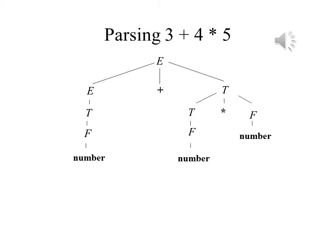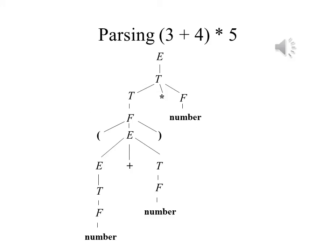Here we see the parse tree as we derive it for 3 plus 4 times 5. On the left, our sub-expression has only one term, and the term on the right has two factors. It lets us see quite plainly that we are multiplying 4 times 5 before doing the addition. Here we see an expression that is a little different: we do the addition first and then the multiplication. We only have one term in the expression, even though one of its factors is an expression inside parentheses. We can parse that expression as part of the larger expression, and you can see the result here.